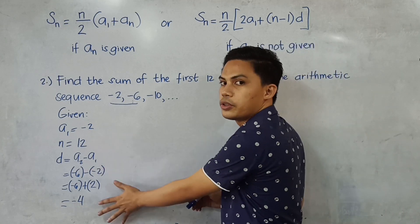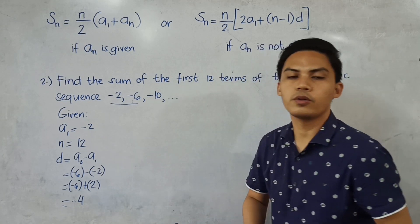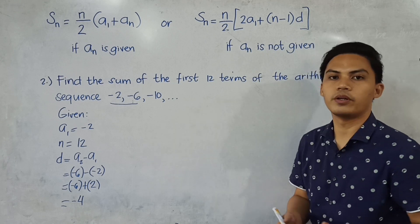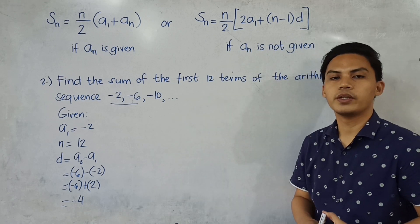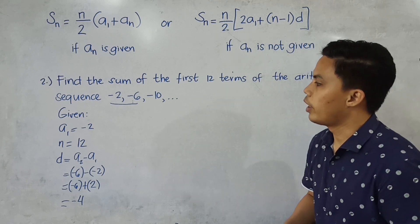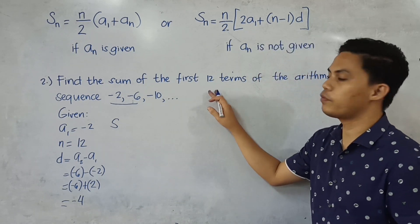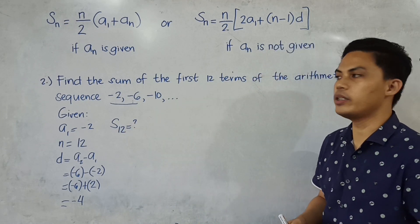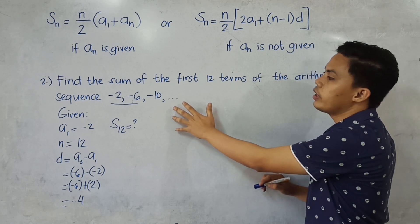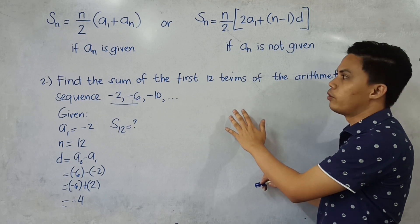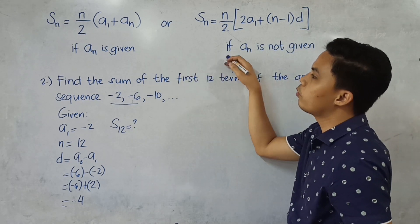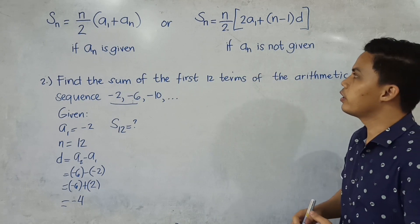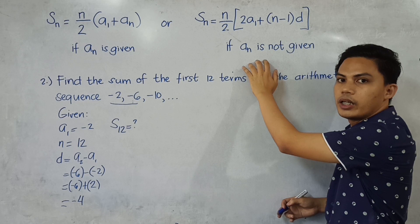The last term is not given in the problem — only an ellipsis is shown — so we're looking for S sub 12. Since the last term is not given, we will use the second formula.